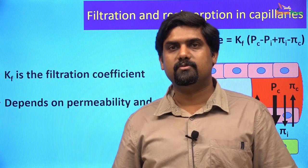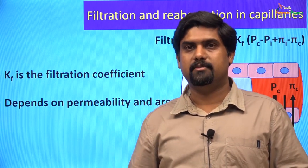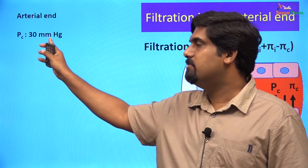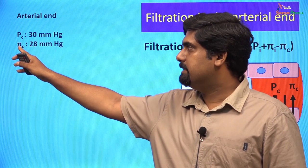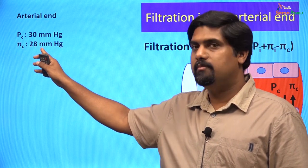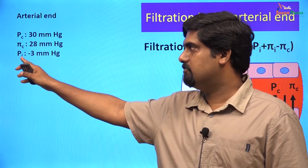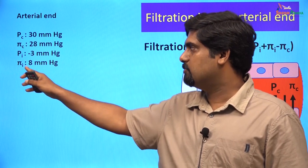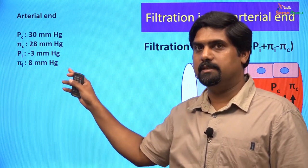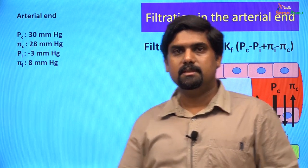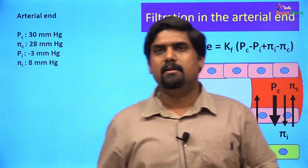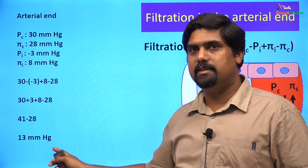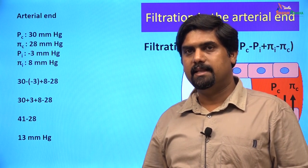Let us discuss the magnitude of the Starling forces at the arterial end of the capillary. The capillary hydrostatic pressure is about 30 mmHg. The capillary colloid osmotic pressure is 28 mmHg. The interstitial fluid hydrostatic pressure is about 8 mmHg. If you put these values into the equation, we will get a net filtration pressure of about 13 mmHg at the arterial end of the capillary, which will favor filtration.